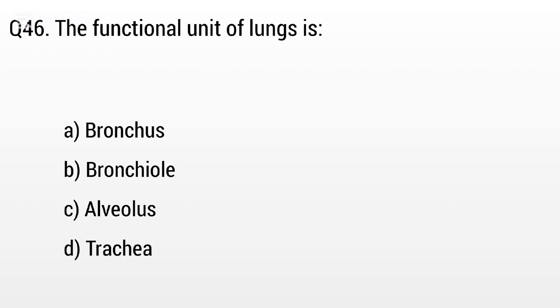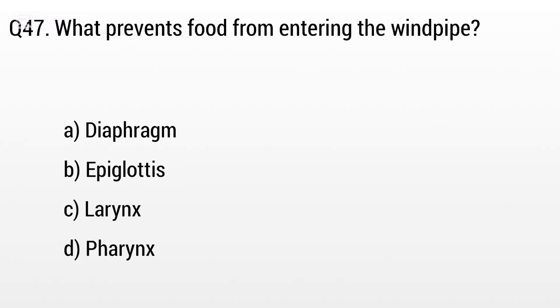Question 46. The functional unit of lungs is: Option A: Bronchus, B: Bronchioles, C: Alveolus, D: Trachea. The right answer is option C, Alveolus.